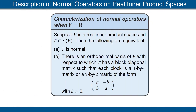Now the results discussed previously in this video can be used to prove the following complete description of normal operators on real inner product spaces. Suppose V is a real inner product space and T is an operator on V. Then the following are equivalent. A: T is normal. B: there is an orthonormal basis of V with respect to which T has a block diagonal matrix, such that each block is either a one-by-one matrix or a two-by-two matrix of the form shown here.